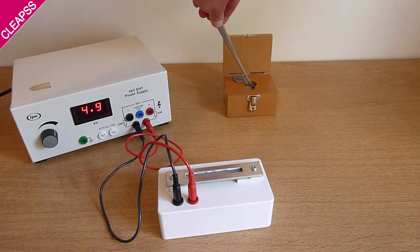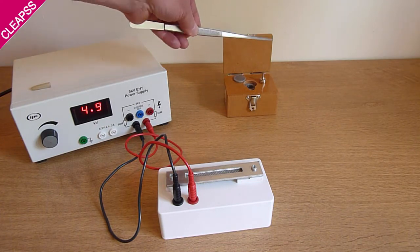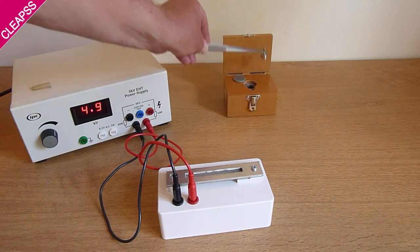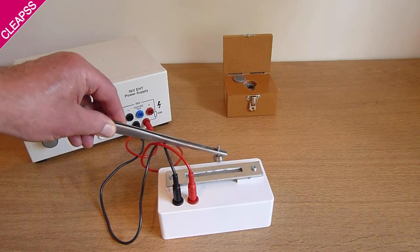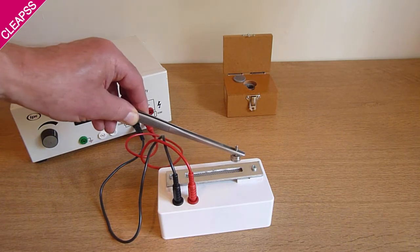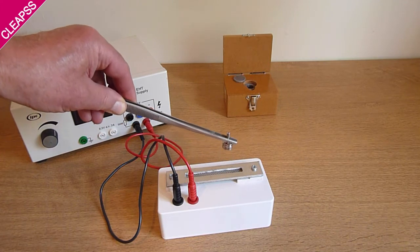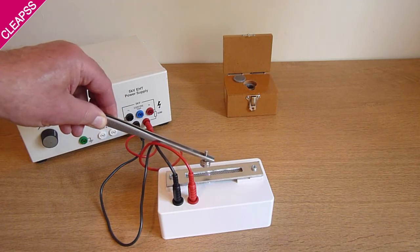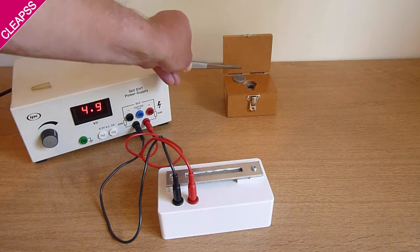Take the source out. I'm using a pair of forceps here to keep my hand at least 10 centimetres away from the source. Reposition and pick it up, and bring it to the spark counter. And I can show the range of alpha by bringing it backwards and forwards. I've finished. Put that back in its pot.